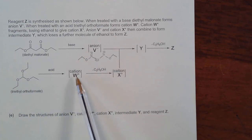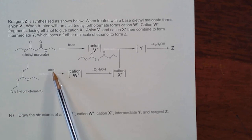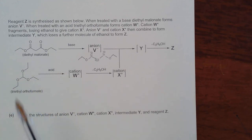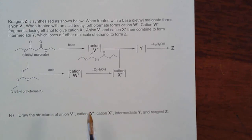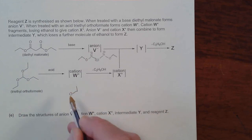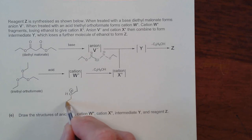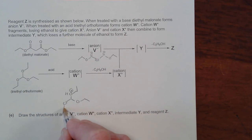Moving on to W⁺: here we are acidifying, so we are adding a proton. We look for lone pairs to accept the proton, and only the oxygen is capable. This has total symmetry, so cation W⁺ simply has a proton on one of the three oxygens — it doesn't matter which. If the proton goes on the first oxygen, we get OH with a +1 charge, and the rest of the structure is identical to what was drawn.